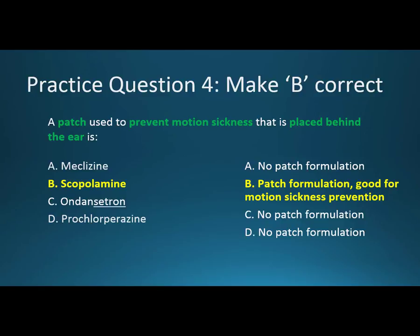Practice question 4: A patch used to prevent motion sickness that is placed behind the ear is? The correct answer is B, scopolamine. Meclizine, ondanzetron, and prochlorperazine don't have patch formulations. Scopolamine does have a patch formulation and it's often used to prevent nausea, especially on cruise ships. You place the patch behind your ear in advance of your trip — it's long-acting and works well to prevent motion sickness before it happens.